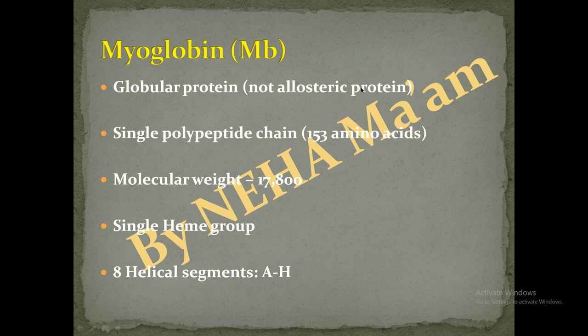We are going to study about hemoglobin. Hemoglobin is an allosteric protein, but myoglobin is not. Myoglobin is made up of a single polypeptide chain of around 153 amino acids. If we talk about molecular weight, it is 17,800. Myoglobin has a single heme group.